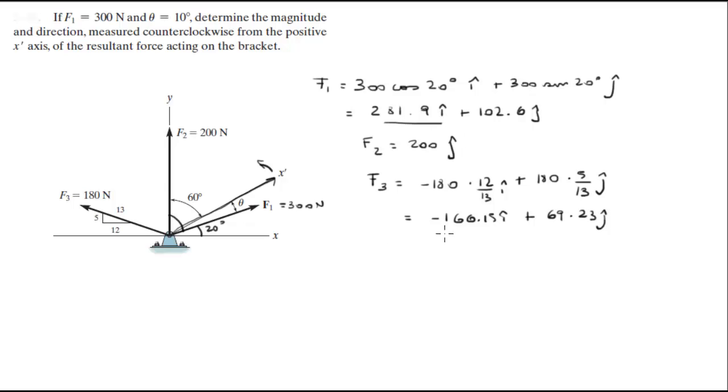Now all you got to do is add the x's together, add the y's together to find the resultant force. And when you add them up you're going to get that it is equal to 115.75 i plus 371.83 j.